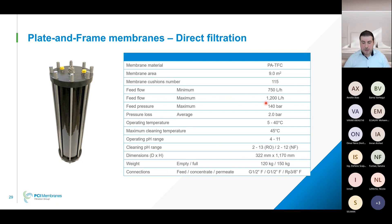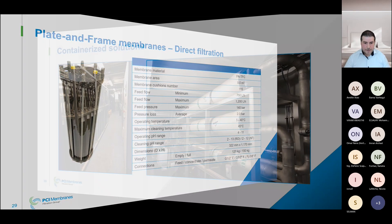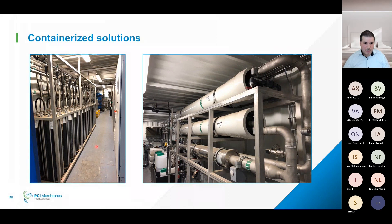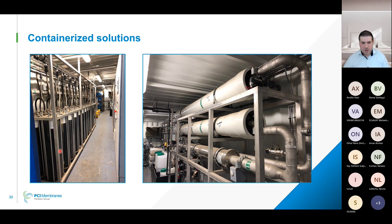A containerized direct filtration system uses plate-and-frame modules for the first pass and spiral wound for the second pass to further reduce ammonia. A 40-foot container typically accommodates multimedia filtration, a high-pressure pump, cartridge filters, CIP cleaning tank, and reagents. One such containerized system can treat up to 120 m³/day. If more treatment is needed — additional concentration stages or polishing — a 20-foot container can be added.